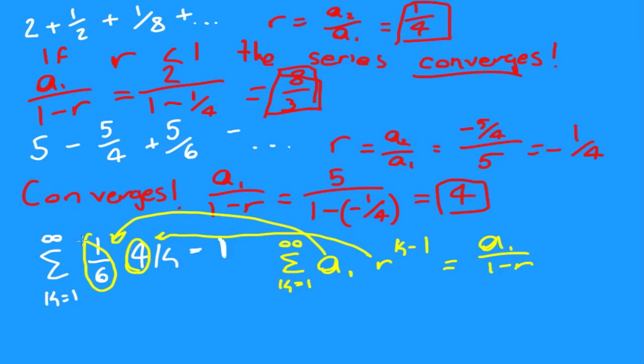But we only need the r, and the r is 4. Since the r is greater than 1, this diverges. It diverges like Shailene Woodley! So it diverges, and that's what you do with those ones—just take a look at the ratio, the ratio next to the k.